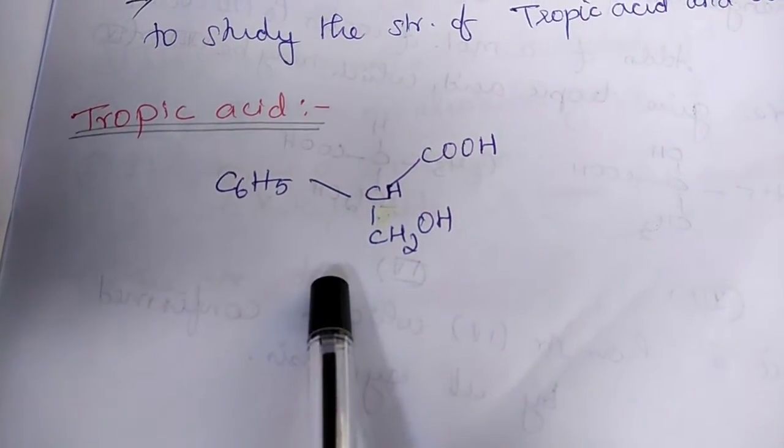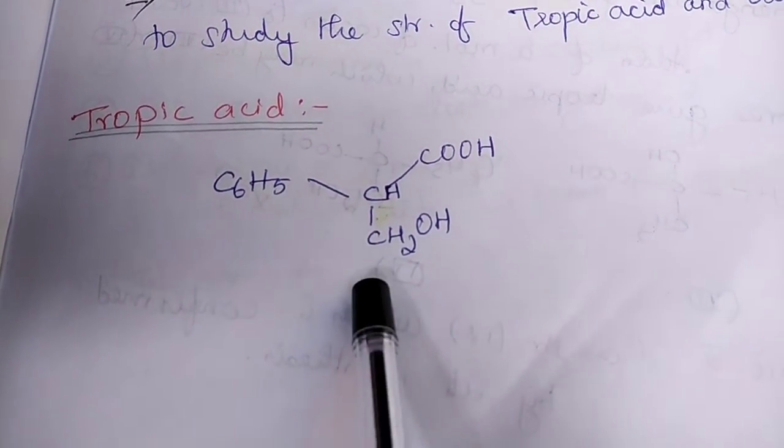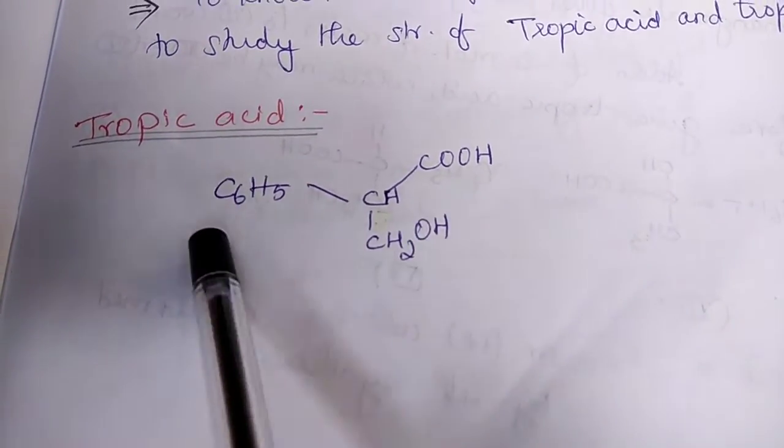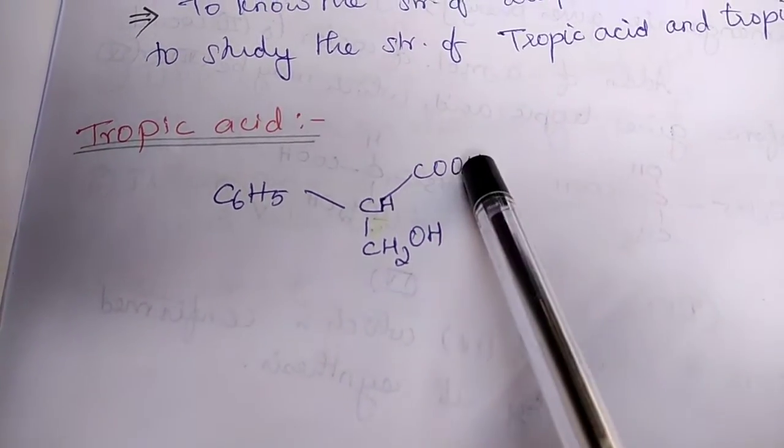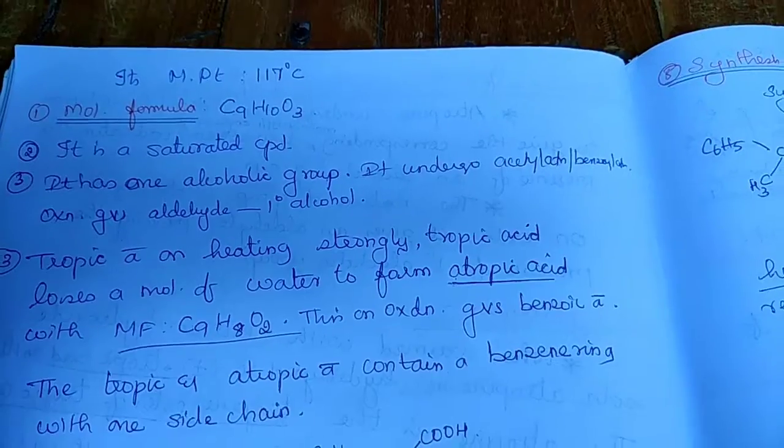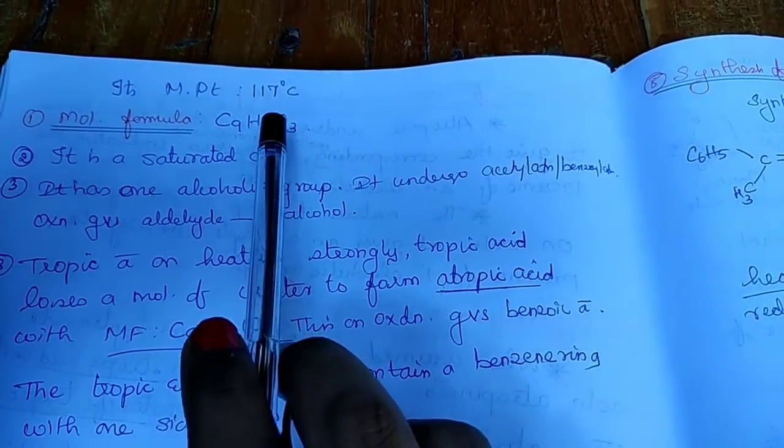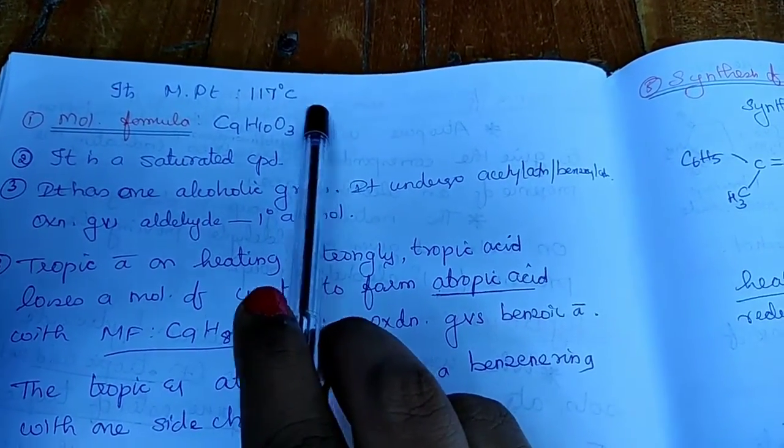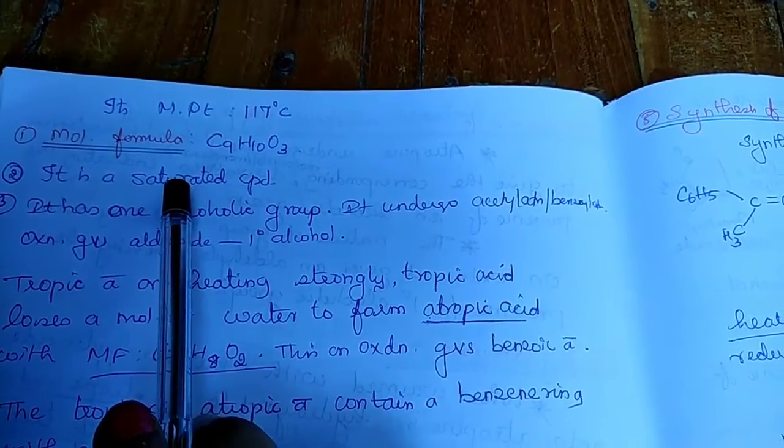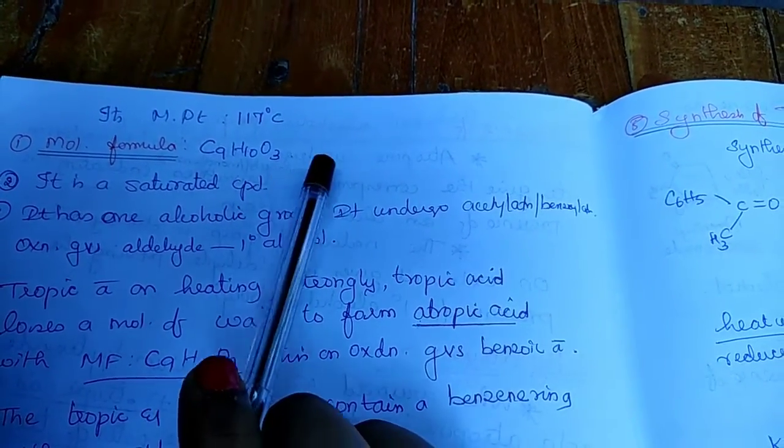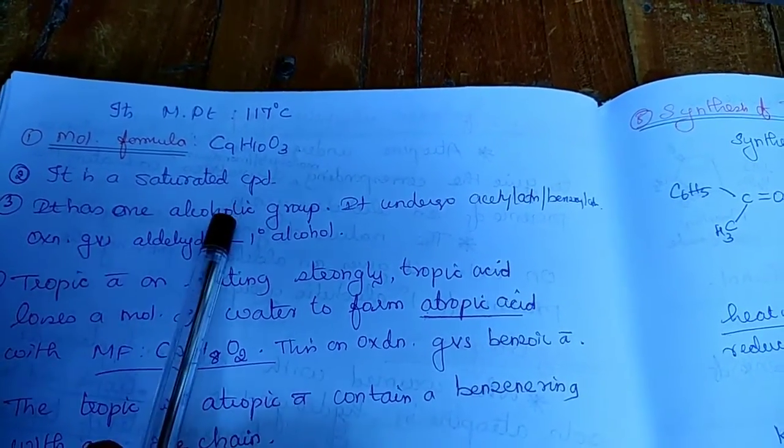This is the structure of tropic acid. As you can see it's a simple structure with a benzene ring, an alcohol and an acid. Its melting point is 117 degrees Celsius. The molecular formula is C9H10O3. It is a saturated compound.